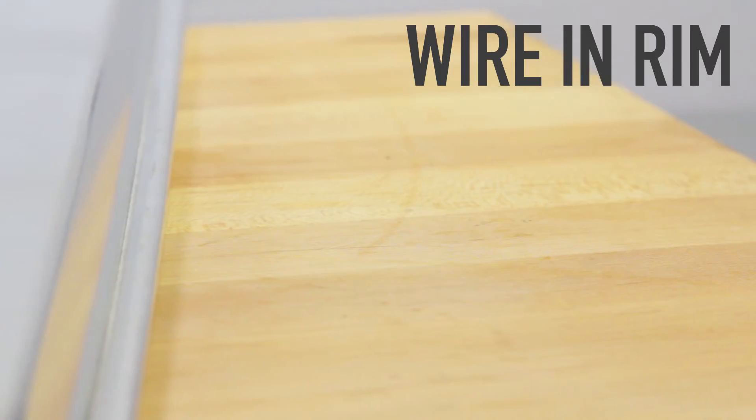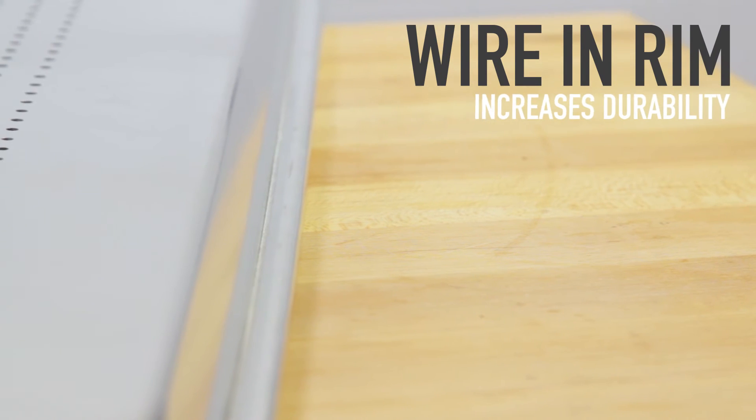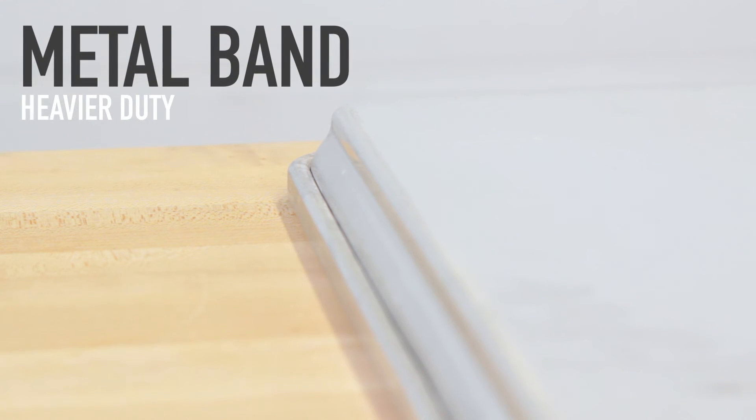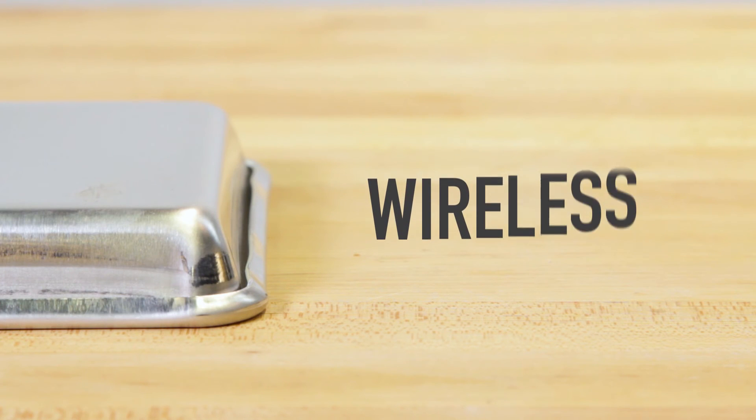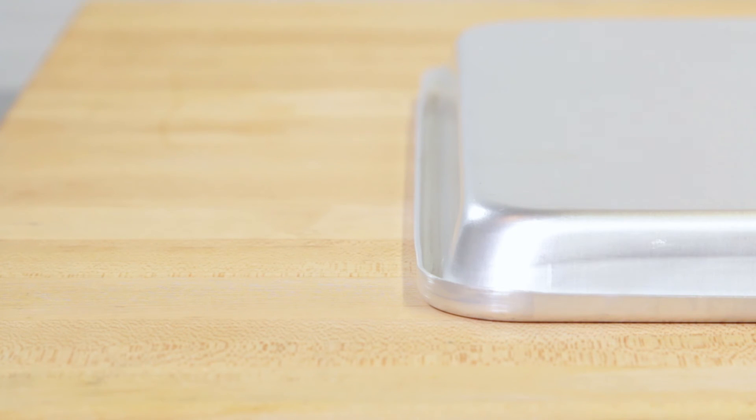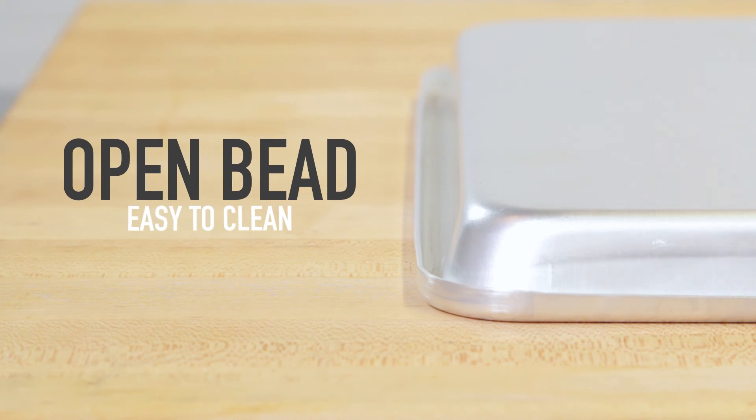Sheet pans with a wire enclosed in the rim increase their durability and keep the pan from warping. Similarly, some pans are reinforced with a metal band for even heavier duty use. Wireless rims offer a fully curved edge, and we also have pans with semi-curled open bead rims that are easier to clean.